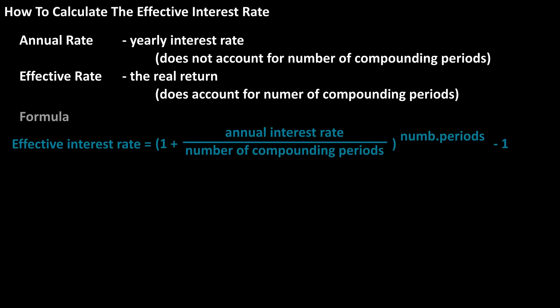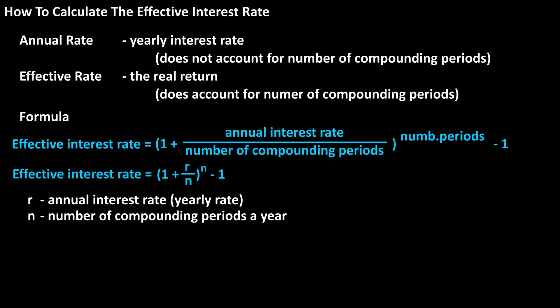The formula to calculate the effective interest rate is: effective annual interest rate equals the quantity 1 plus the annual interest rate divided by the number of compounding periods, raised to the number of compounding periods, minus 1. And here is a shortened version of the formula.